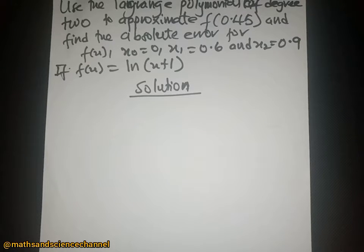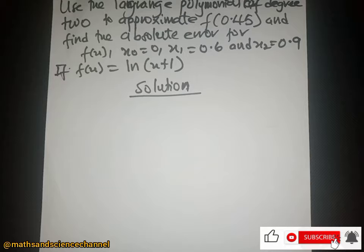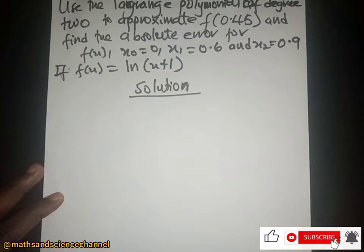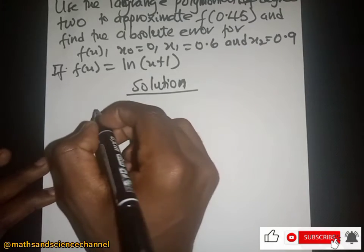Hello students, welcome once again. In this section we want to look at Lagrange polynomial of the second degree. We are going to use it to approximate the function and also find the absolute error for the function, where f(s) is equal to ln(s+1).